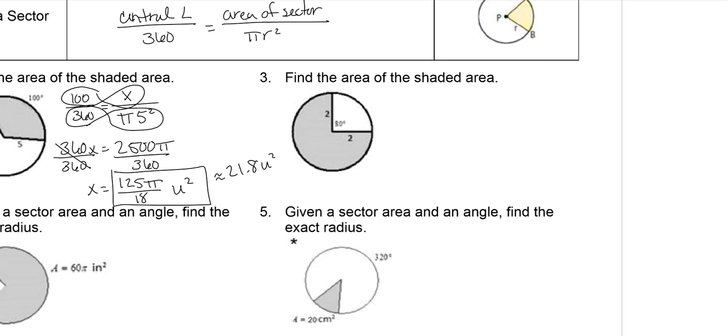This one says find the area of the shaded region, but they only give you this angle measure. So to figure out the angle measure of the shaded region, we need 360 minus 80, which is 280. So part of the degree over the whole degree, and then we're trying to figure out the sector area over the area of the circle.